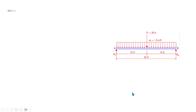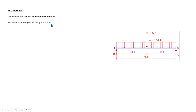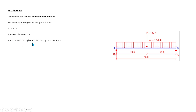Next, we use the ASD method to determine the maximum service moment. The service uniform load is 1.5 kips per foot and the concentrated load is 30 kips. The service moment is wL²/8 + PL/4 = 1.5 × 30² / 8 + 30 × 30 / 4 = 393.8 kip-feet.